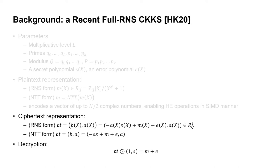So from a ciphertext, we get the plaintext m by decryption, which is the dot product between the ciphertext ct and (1, s), which is the secret key. We get the plaintext m with a small error e.